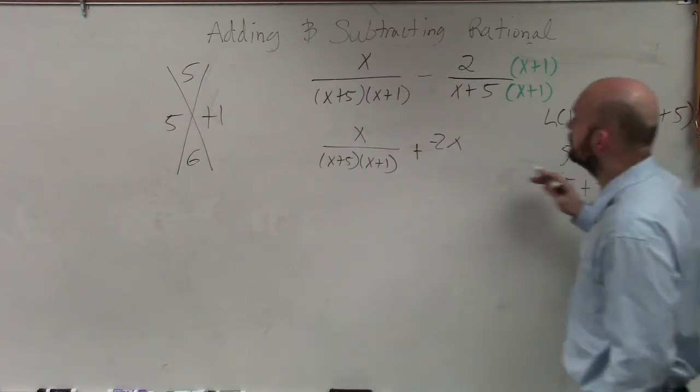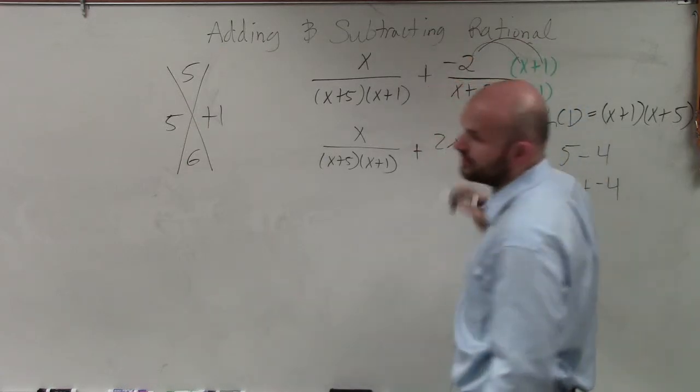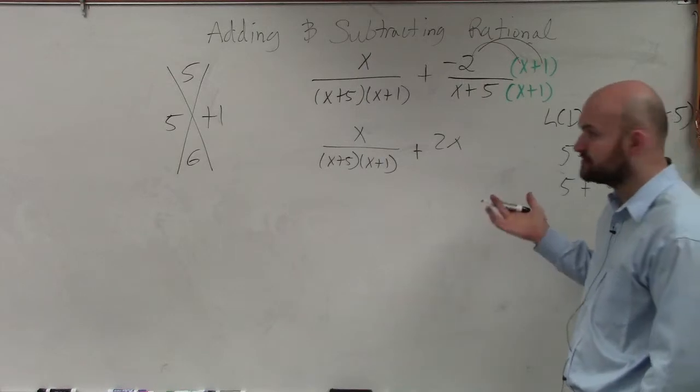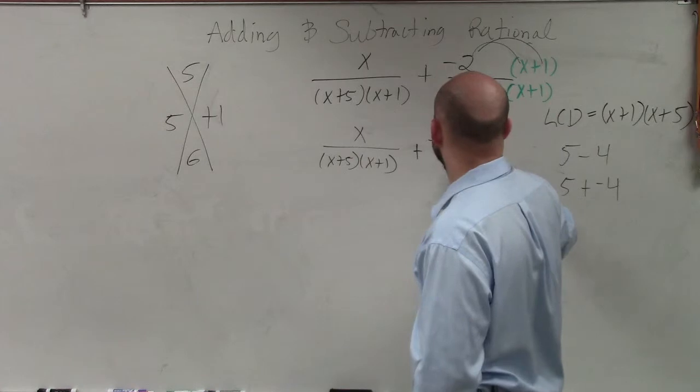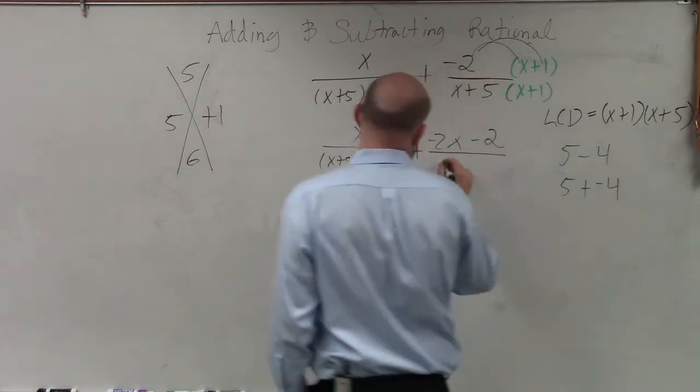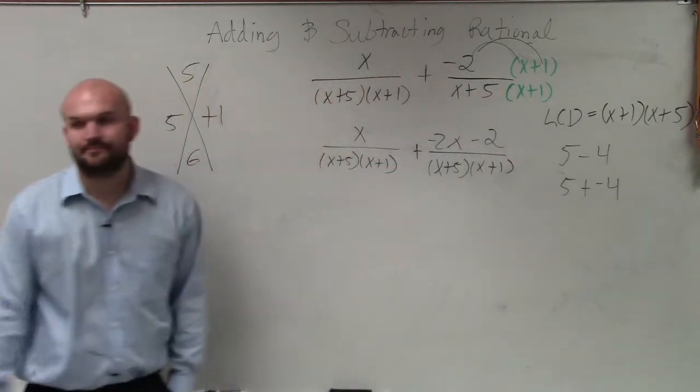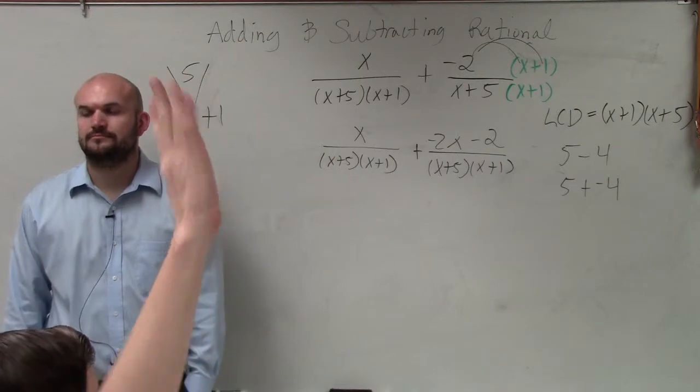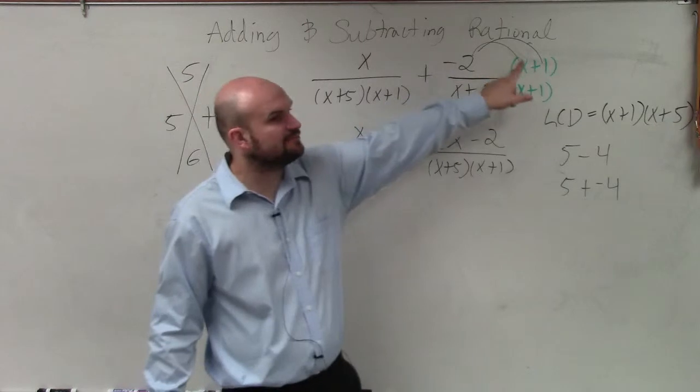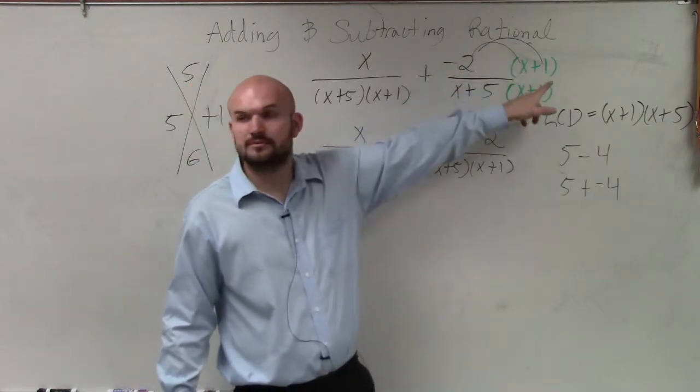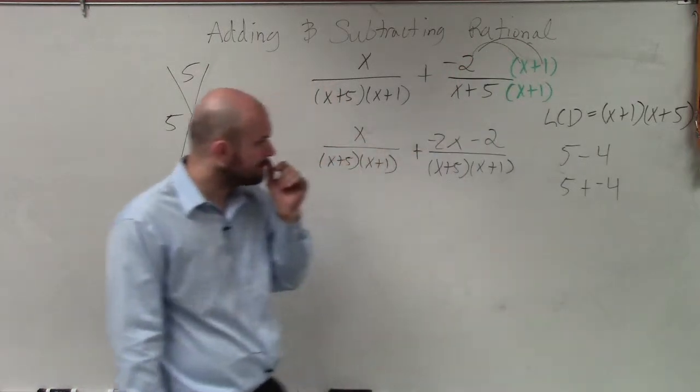Student: So how do you get the 2x? You have to apply distributive property plus a negative. I didn't get to that point yet. So negative 2 times x is negative 2x. Negative 2 times 1 is negative 2, all over (x+5)(x+1). I thought you have to multiply this times both of the terms. Distributive property, right? Whatever's outside the parentheses, you have to multiply to both those terms, then you just add them together.